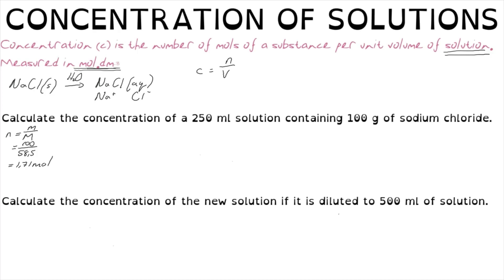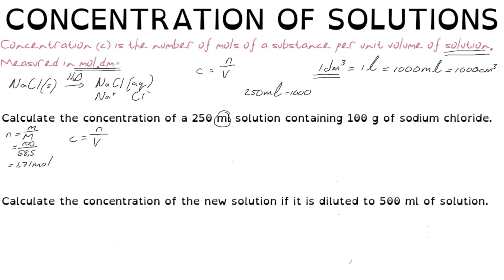We then convert moles into concentration: concentration equals number of moles divided by volume. A note on volumes — in chemistry the preferred unit is cubic decimetres, which is a cube of 10 cm × 10 cm × 10 cm. One cubic decimetre equals exactly one litre, which equals 1000 millilitres. So we always convert the given volume into cubic decimetres. Here, 250 mL ÷ 1000 = 0.25 dm³.